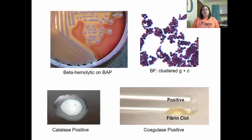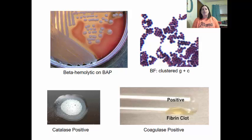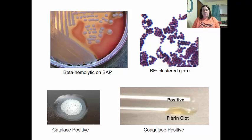Since we're looking at Staphylococcus aureus, remember it is beta-hemolytic on blood agar. It has clustered gram-positive cocci. It is catalase positive and coagulase positive. This has come up several times in slides when discussing how to identify staph infection using laboratory procedures.